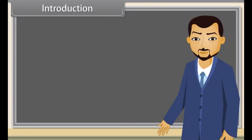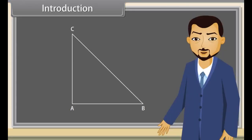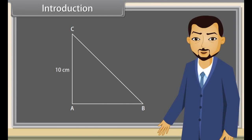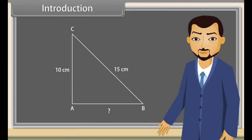Introduction: Can anyone tell what similar triangles are? Similar triangles are triangles whose corresponding angles are the same but whose corresponding sides may be of different lengths. Absolutely correct. Look at this right triangle. If one side is 10 cm and the second side is 15 cm, can you tell the length of the third side? Yes, we can find it using the Pythagoras theorem. So today we will learn about Pythagoras theorem.